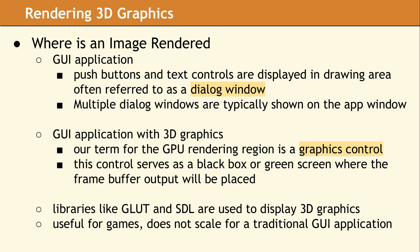No matter what platform or operating system your application is running on, a GUI application must have a drawing area where push buttons, text controls, and other widgets are displayed. This drawing area has various names, but it is commonly referred to as a dialogue window. A GUI application is typically laid out so multiple dialog windows can be displayed simultaneously on the main application window. For graphics rendered on a GPU, the drawing area of the frame buffer is displayed in a region we have termed a Graphics Control. The intent of the Graphics Control is to serve as a black box telling the GPU where the rendered output should appear. The frame buffer, which contains the rendered graphics, can only be displayed in the Graphics Control.